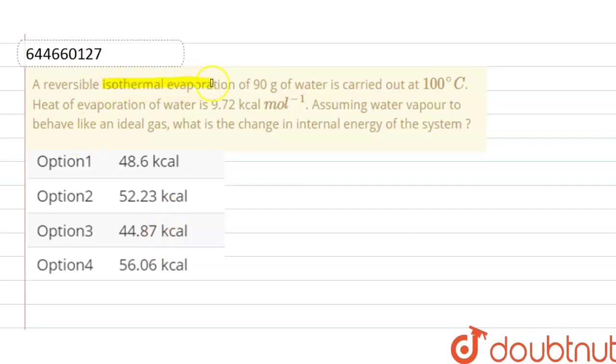A reversible isothermal evaporation of 90 grams of water is carried out at 100 degrees Celsius. Heat of evaporation of water is 9.72 kilocalories per mole. Assuming water vapors behave like an ideal gas, what is the change in internal energy of the system?